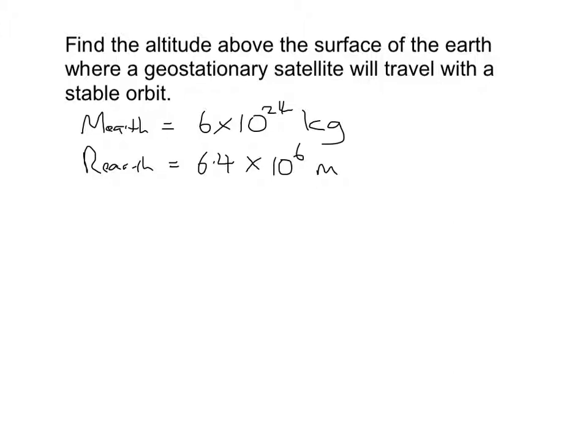So what we need to do with this is get our equation that we're going to use, and we have this one: r cubed over t squared equals G times the mass of Earth over 4π squared. And we need to work out the altitude so we're going to be looking for the radius. So I'm going to rearrange this to get r cubed is equal to GMT squared over 4π squared.